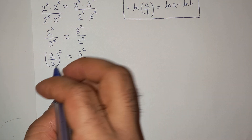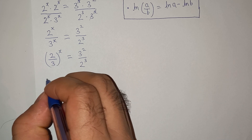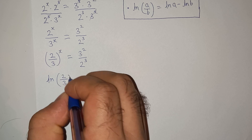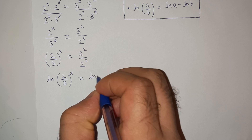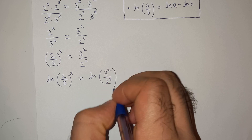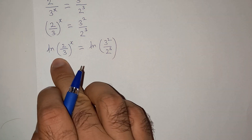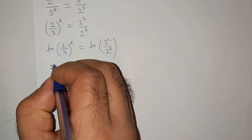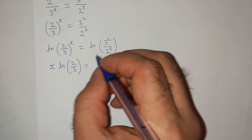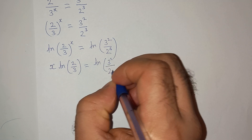Now we will take the natural logarithm on both sides. So: ln of (2/3) power x equals ln of (3 squared divided by 2 cubed).